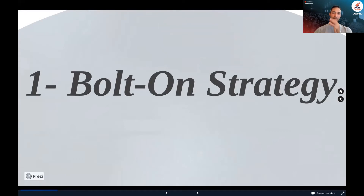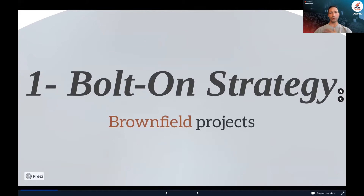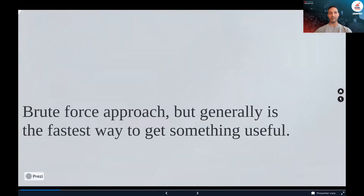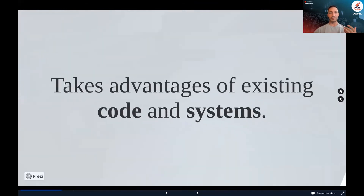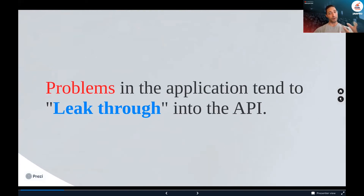We have three strategies for adding an API. The first is the bolt-on strategy — also called brownfield. Brownfield is when you already have a running system and need to add APIs to expose existing functionality, like for a mobile app or integration. It's a brute force approach but generally the fastest way. It takes advantage of existing code and systems. The downside is that problems in your system, like bugs, will leak through the APIs.